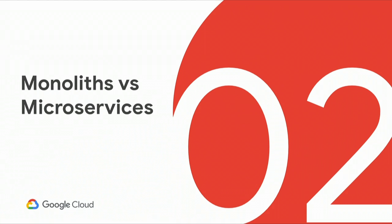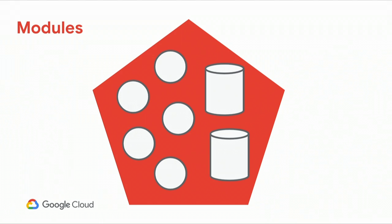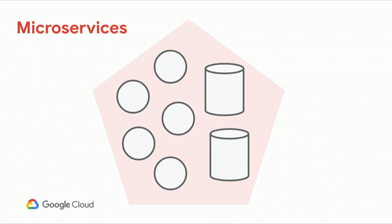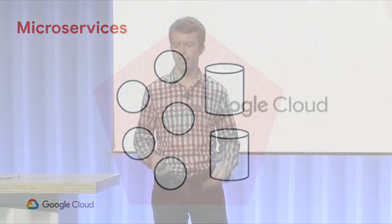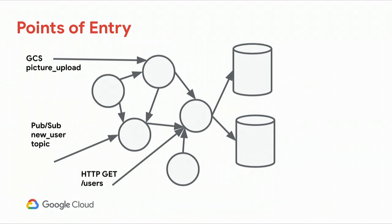What's the difference between monoliths and microservices? Traditionally with a monolith, you have a single application — one giant app you deploy all at once, with different pieces of logic and a couple of databases. The idea of microservices is to break away from this monolithic application and configure your points of entry, which might be Google Cloud Storage uploads, HTTP triggers, or PubSub events, and be able to trigger these independently.